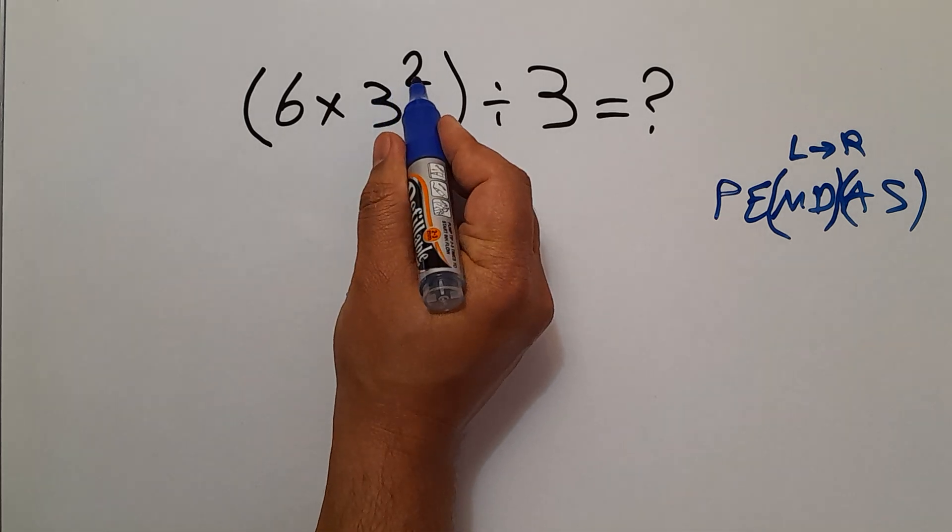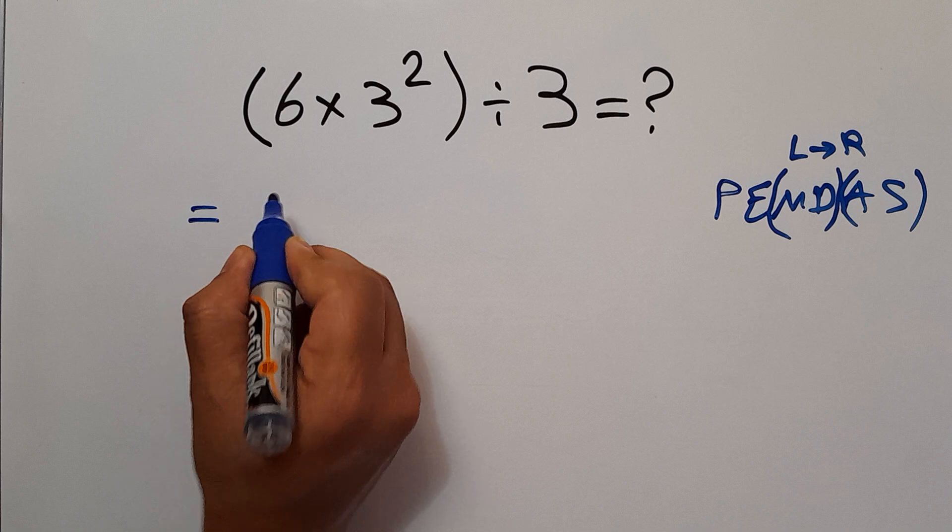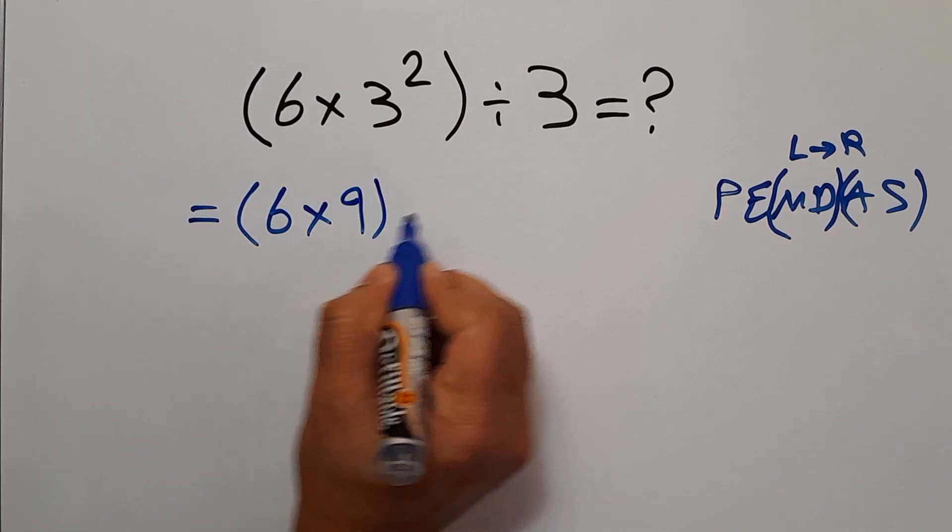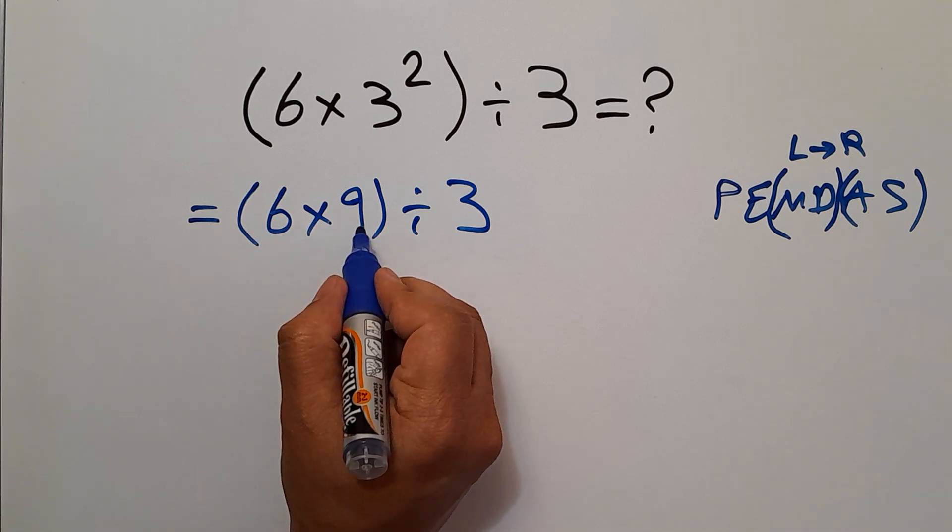3 squared equals 9, so we have parentheses 6 times 9, divided by 3. 6 times 9 equals 54.